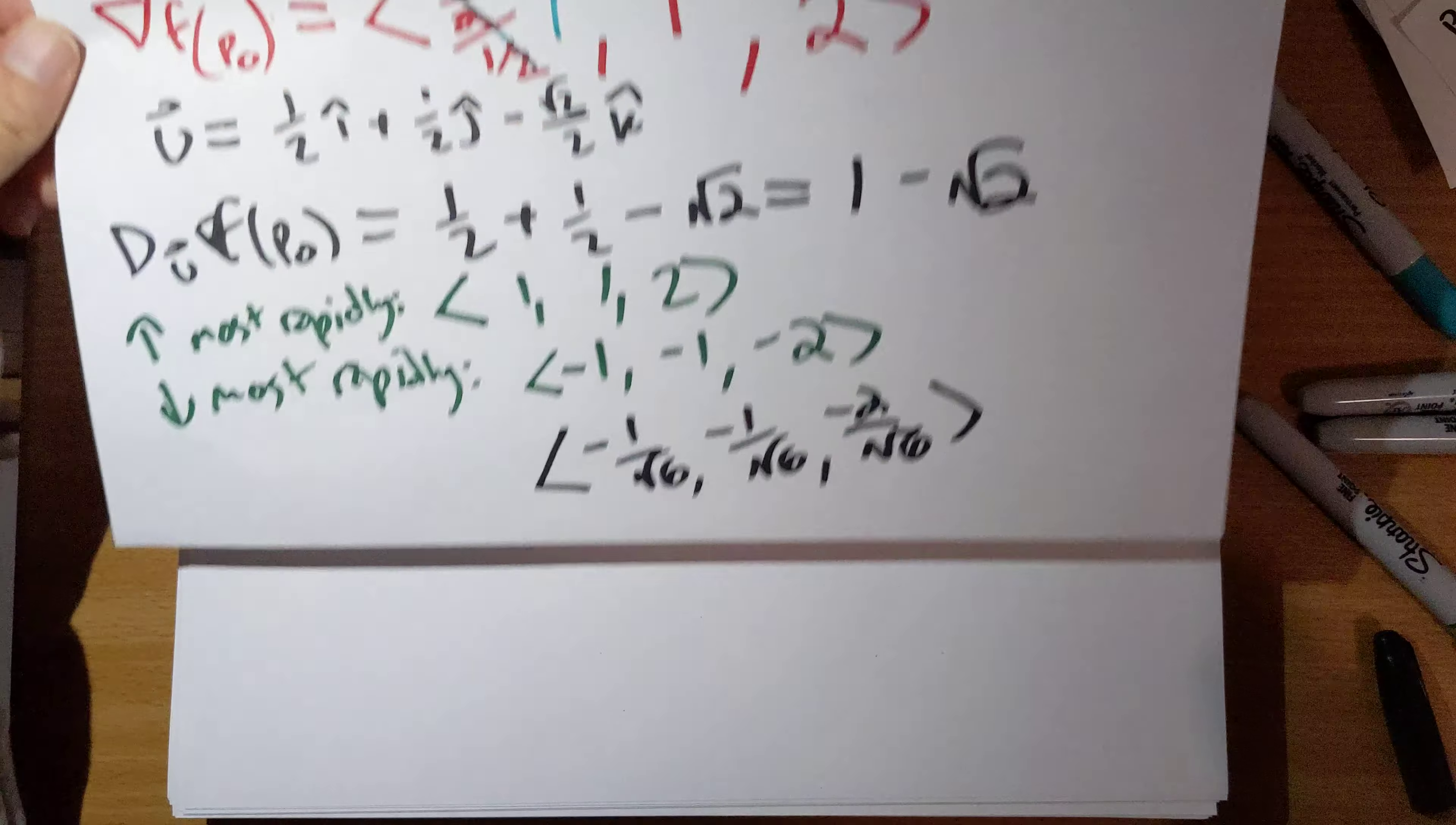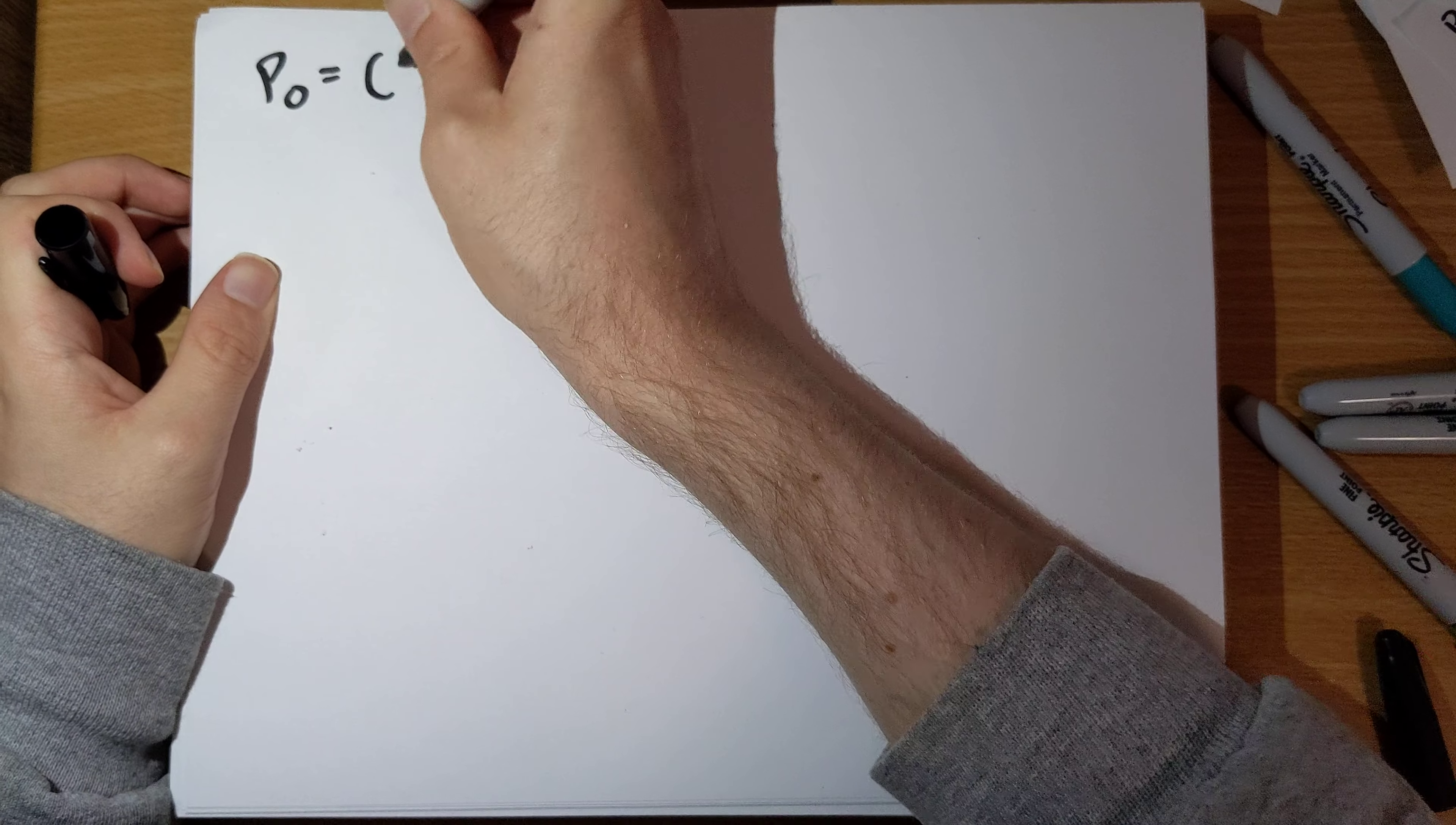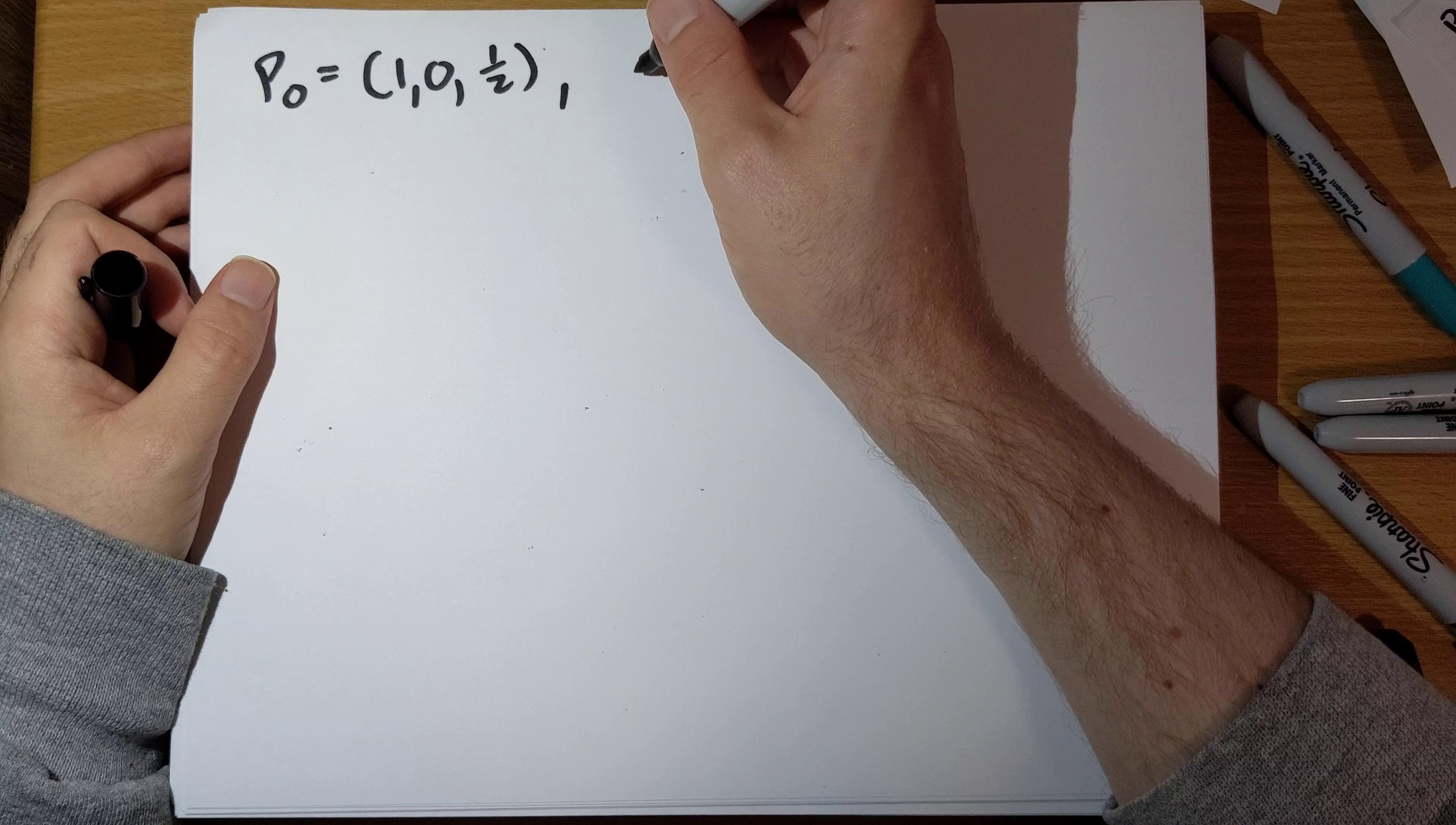And then c, find equations for the tangent plane and normal line to the surface fxyz is 2 minus log 2 at that point. Okay, so our point is 1, 0, 1, 2.